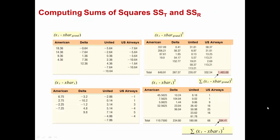We compute the deviation of each observation from the grand mean, square those, and sum the results for all 22 observations to get our sums of squares total. For each observation, we subtract the grand mean and here are the resulting deviations. For example, 18.36 squared is 337.09, and so on. We sum all of those up and come up with 1485.09, which is our sums of squares total.